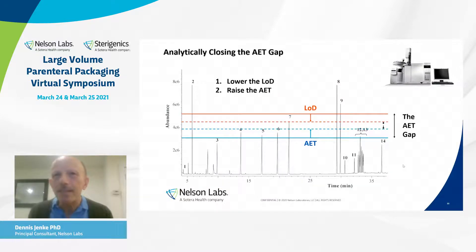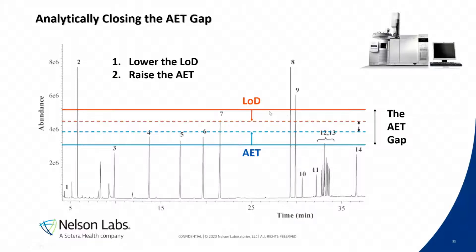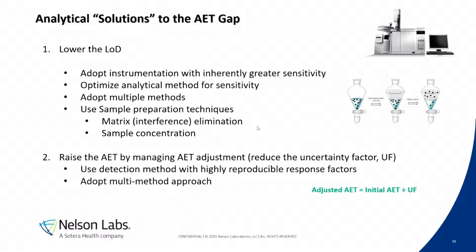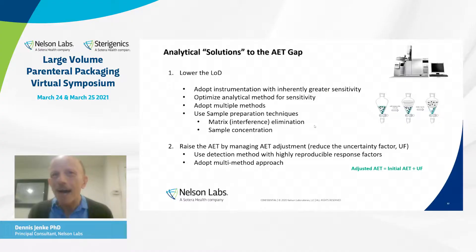The analytical option is obvious: do something to the analytical chemistry to either lower the limit of detection or raise the AET so the gap gets smaller. You can buy the latest instrumentation, since every year a vendor comes out with an instrument that has greater sensitivity. You can optimize your analytical method for sensitivity — these screening methods are a compromise between sensitivity and broad scope.